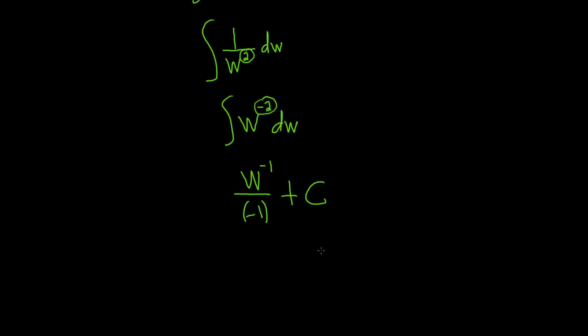Maybe the last step would be to put the negative outside, and bring the w back down so that the exponent is positive. So it's really w to the 1, but we don't have to write it, because w to the 1 is the same thing as w. So let's put the negative up front, and bring it down.